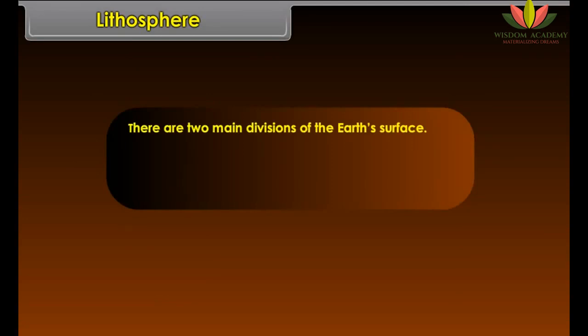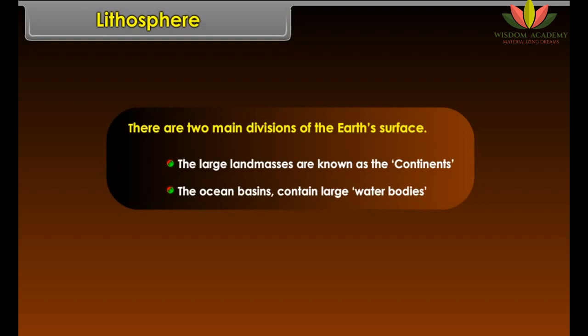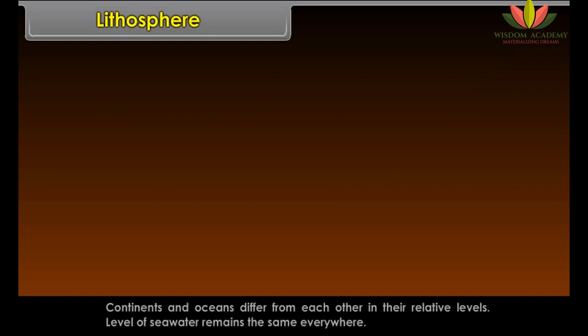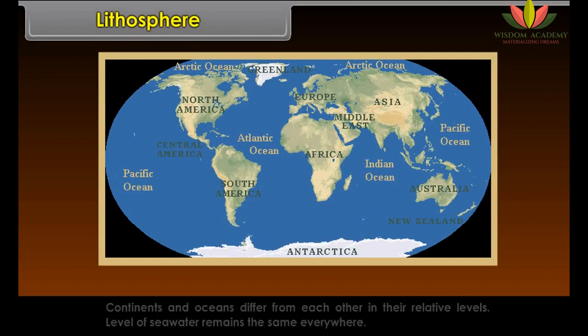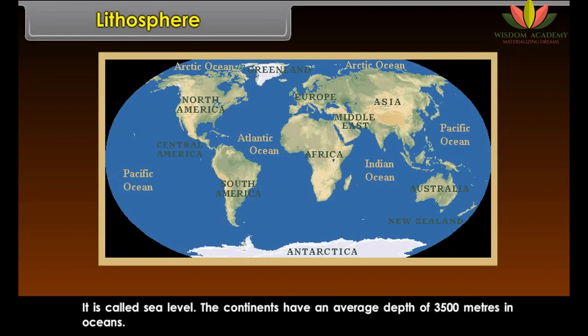There are two main divisions of the earth's surface. The large land masses are known as continents. The ocean basins contain large water bodies. Continents and oceans differ from each other in their relative levels. The level of seawater remains the same everywhere and is called sea level.